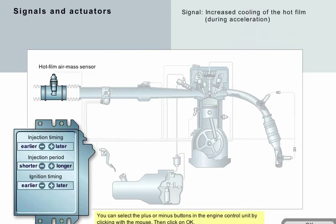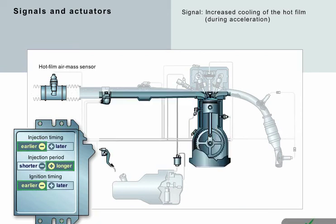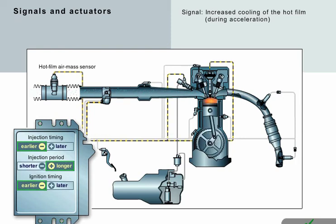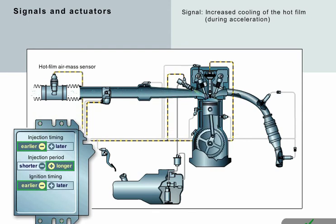During acceleration, the hot film air mass sensor signals increased cooling of the hot film to the engine control system. Increased cooling of the hot film means that more air is flowing through. Accordingly, more petrol must be injected, which is why the period of injection is prolonged. Corresponding to this, ignition must begin earlier, which is why the point of injection is moved forwards.